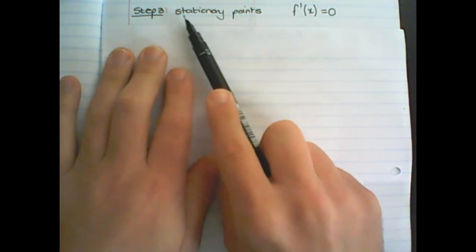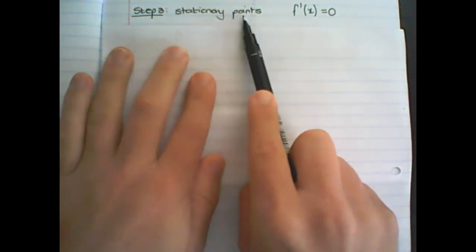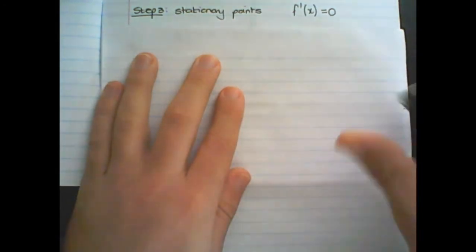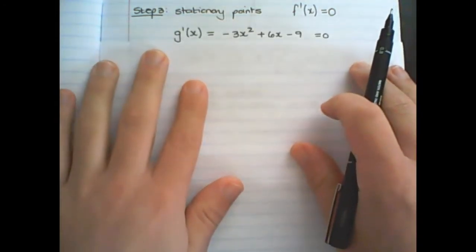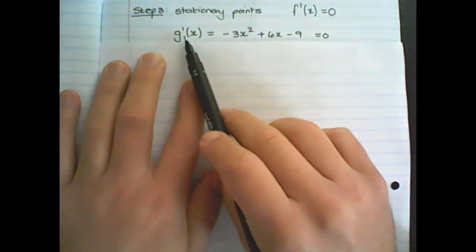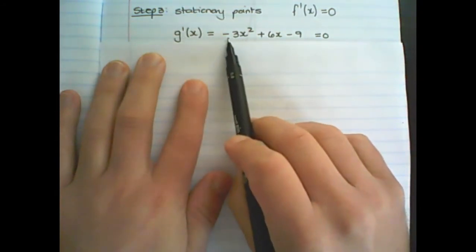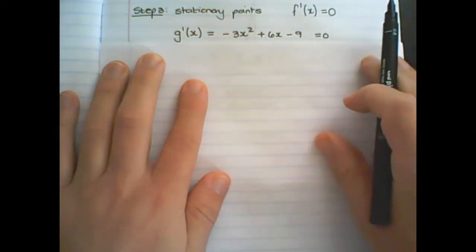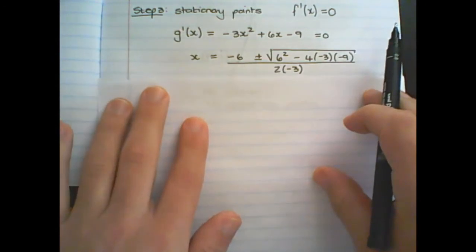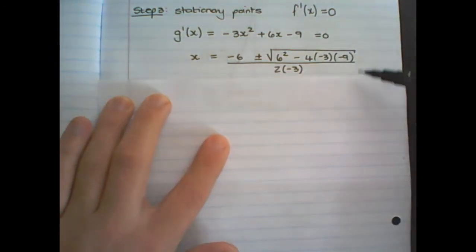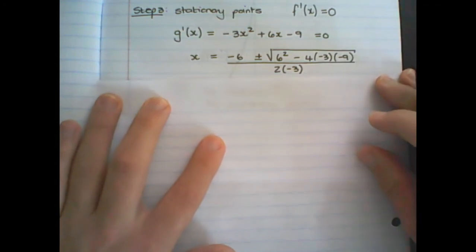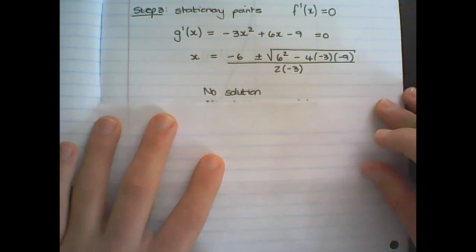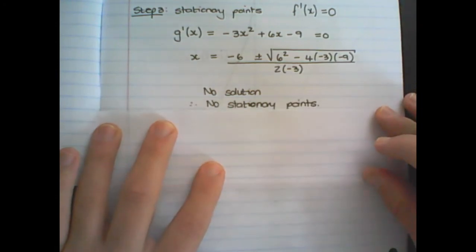Step 3 is to find stationary points, where the first derivative is equal to zero. I find the first derivative of g(x), which is negative 3x squared plus 6x minus 9, and place that equal to zero. Using the quadratic formula to solve for x, I find that there is no solution. When there is no solution, that means there are no stationary points.